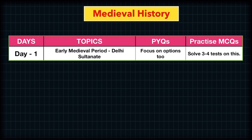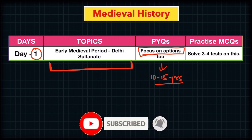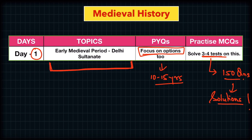Now for medieval history on Day 3, start from the early medieval period after the death of Harsha and cover up to the Delhi Sultanate. Apply the same approach: 10 to 15 years of PYQs focusing on each and every option to gain more information from their solutions. Then practice MCQs with at least 3 to 4 tests. When you can't answer a question, use the elimination method and mark it.